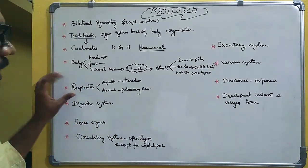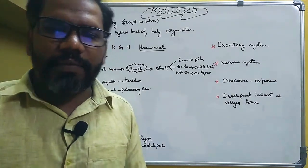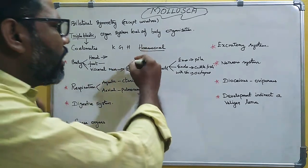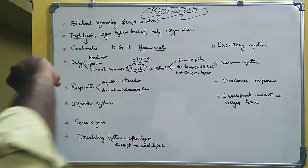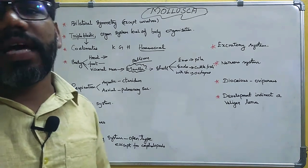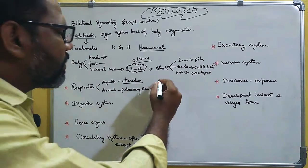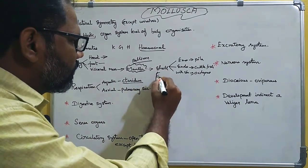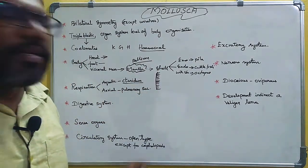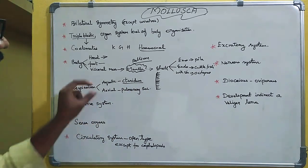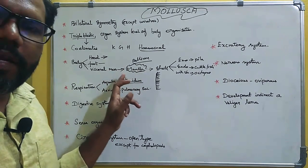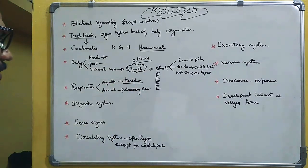The space between the visceral mass and the mantle is called the mantle cavity. In the mantle cavity, ctenidia (feather-like or lamellar gill structures) are present. These gills are used for respiration in aquatic mollusca. Aerial respiration occurs via a pulmonary sac.